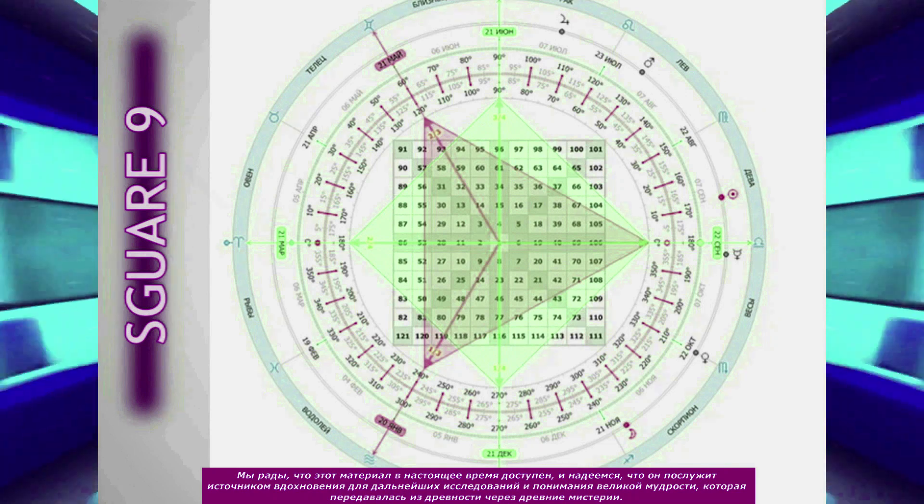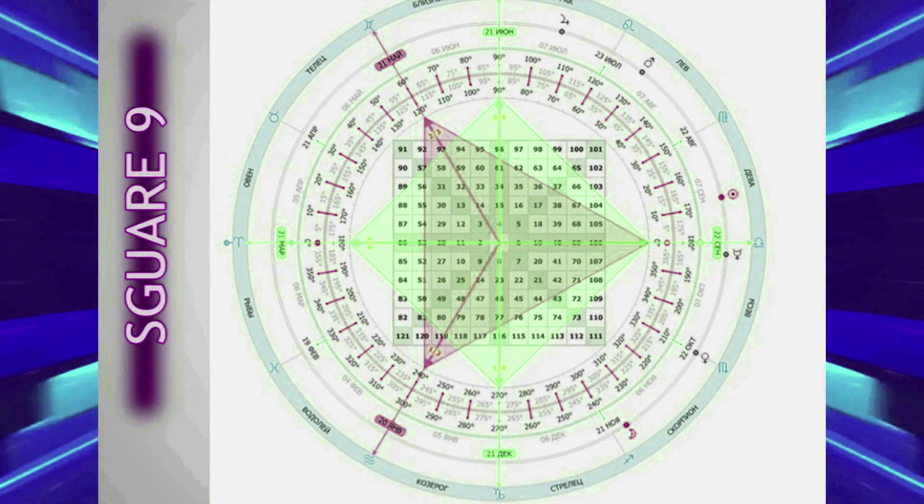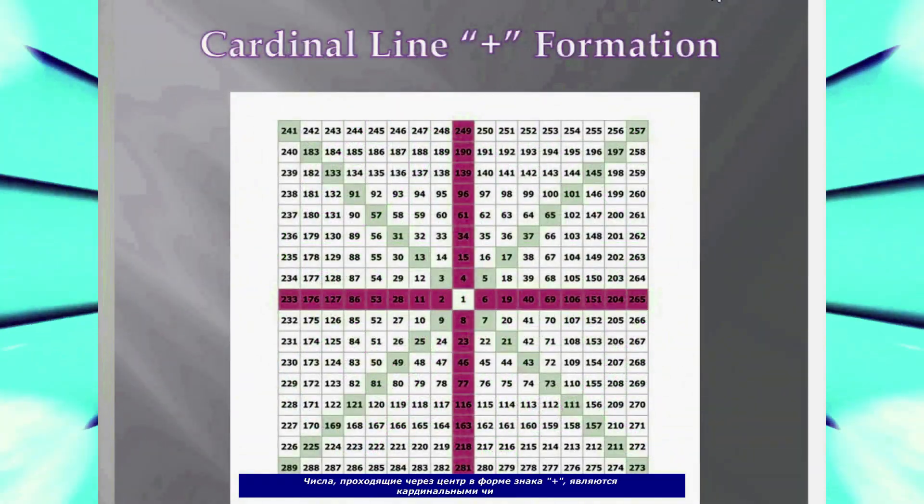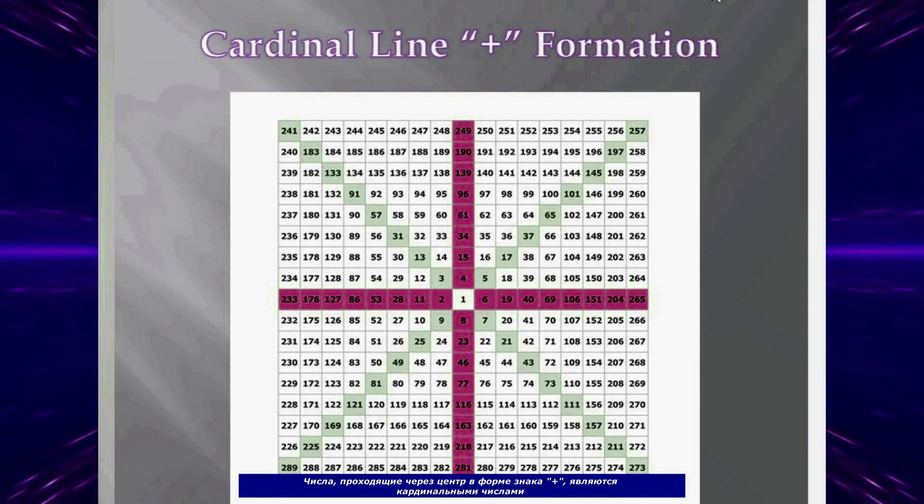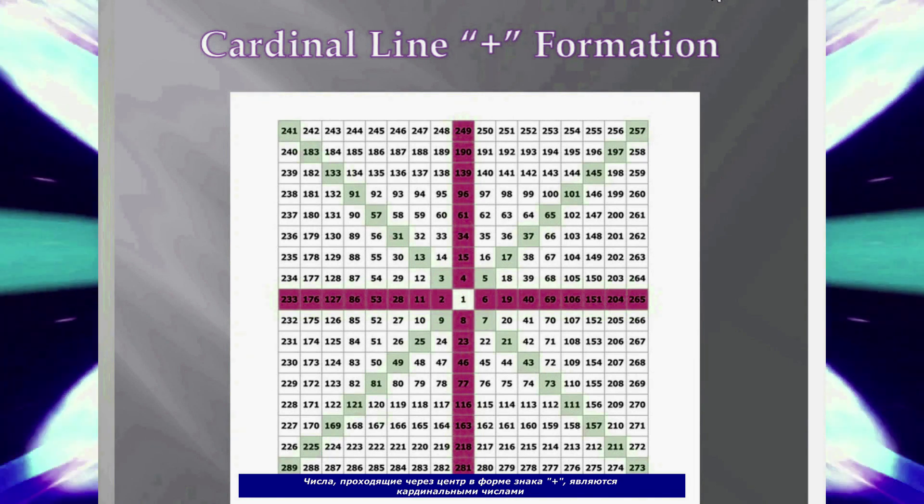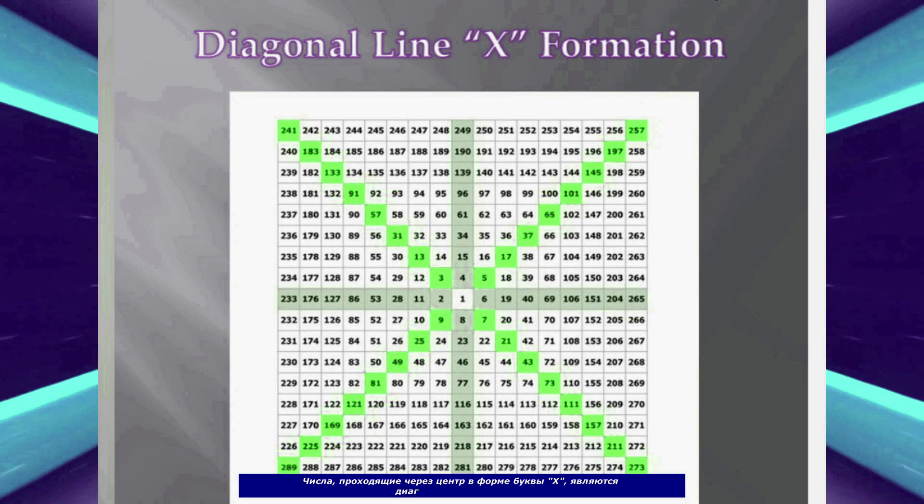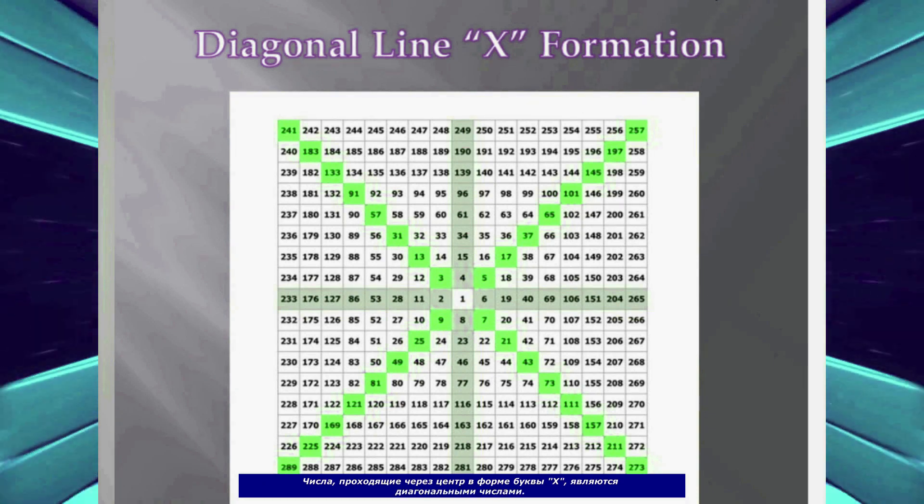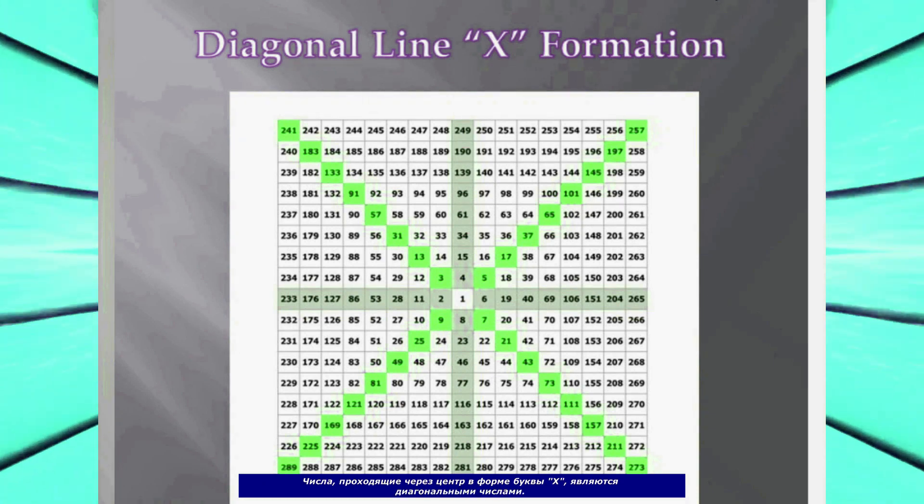The numbers that run through the center in the shape of a plus sign are the cardinal numbers. The numbers passing through the center in the shape of the letter X are diagonal numbers.